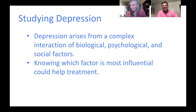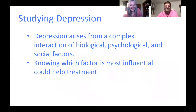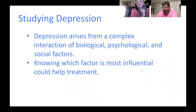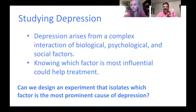We're switching now from gender equality to mental health, and we're going to look at a study that dealt with depression. Depression arises from a complex interaction of biological, psychological, and social factors. Knowing which factor is most influential could potentially help with treatment. So can we design an experiment that isolates which factor is the most prominent cause — biological, psychological, or social?